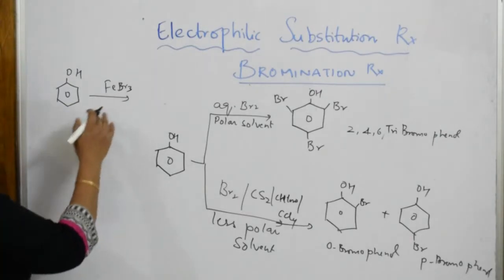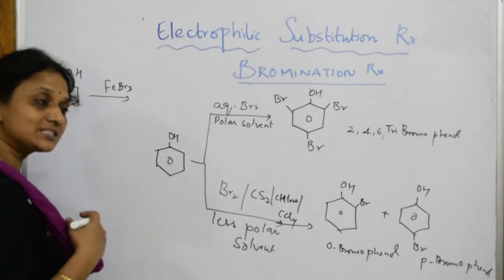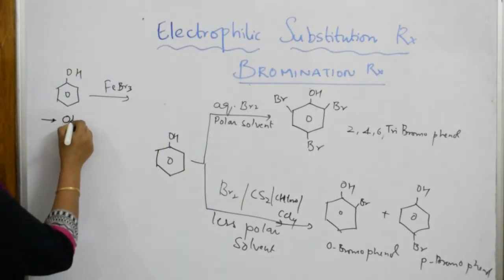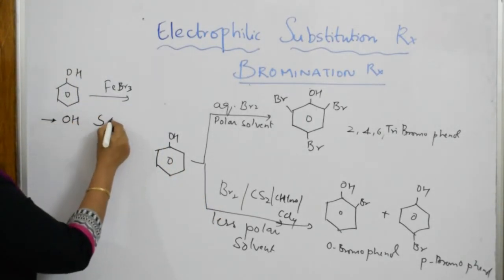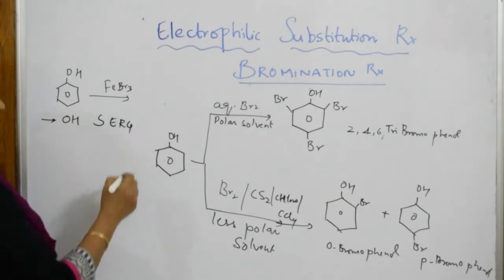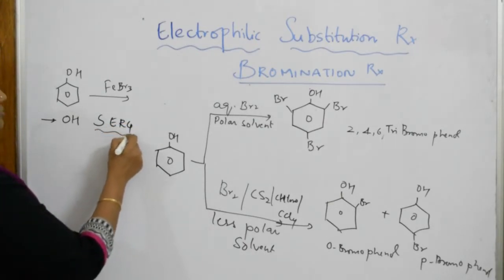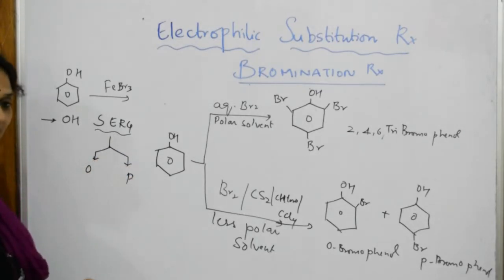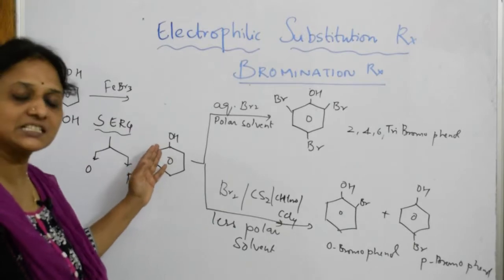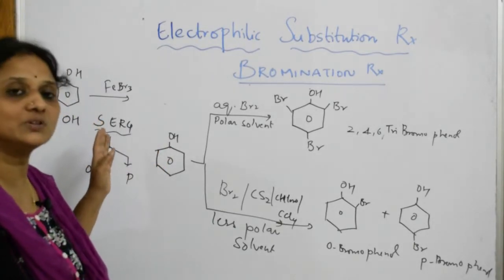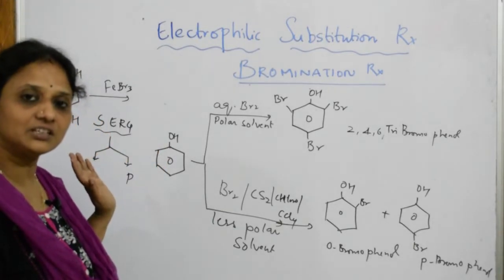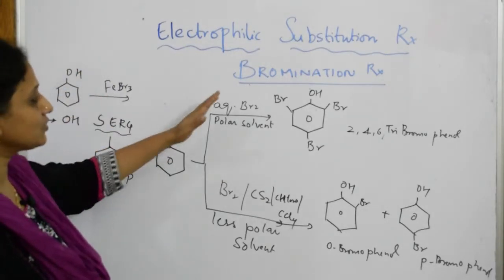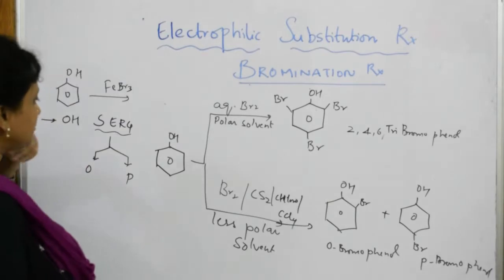FeBr₃ is not used as a Lewis catalyst here because the OH group is a strongly electron-releasing group. When it is a strongly electron-releasing group, it directs the incoming electrophile into the ortho and para positions. When OH is already present on the ring, I don't require any Lewis catalyst to allow the electrophile to enter. So we don't use FeBr₃ here.